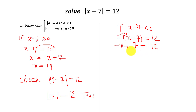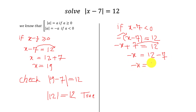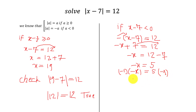We change the sign of 7 from left to right. We get negative x equals 12 minus 7, so negative x equals 5. We multiply both sides of this equation by negative 1, and we get x equals negative 5.